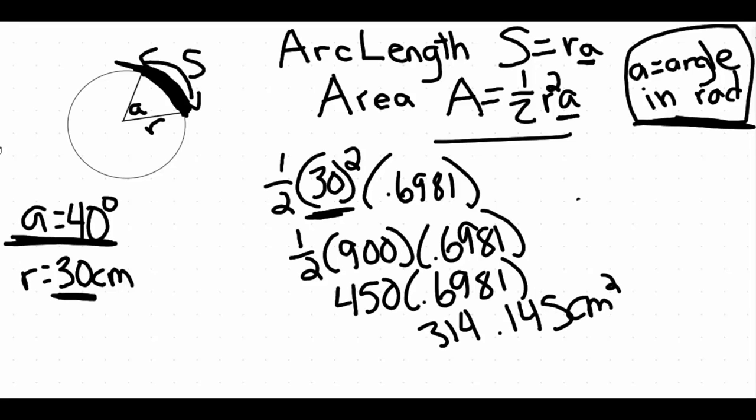And because we're talking about area, remember the area always has units squared. So this would be centimeters squared. And then again, just keep in mind where specifically you're needing to round depending on instructions for your particular problem. But otherwise, that's how you find the arc length and the area of a sector.